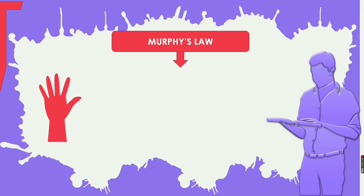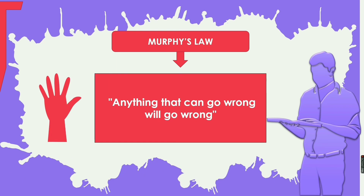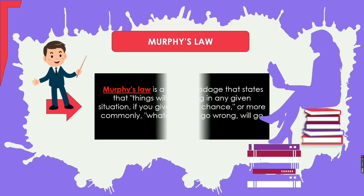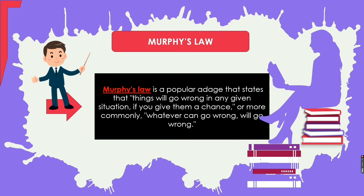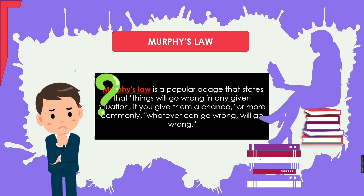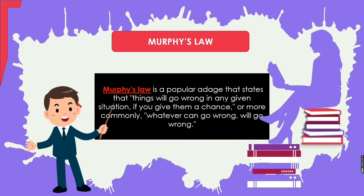Next we cover Murphy's Law — a famous adage well known in aviation. Murphy's Law states: anything that can go wrong will go wrong. It is a popular adage that says things will go wrong in any situation if you give them a chance. More commonly: whatever can go wrong will go wrong, meaning if you give any chance to a situation to happen, it will most probably happen.